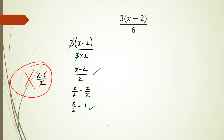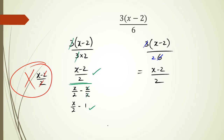You can also leave your answer as (x minus 2) over 2 — that is simplified as well, you don't need to go past that point. To do this the quick way: look at the 3 in the numerator and the 6 in the denominator. 3 divided by 3 is 1, and 6 divided by 3 is 2, so the answer is (x minus 2) over 2.